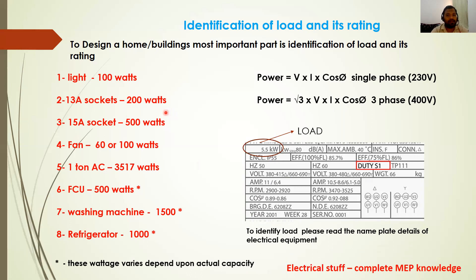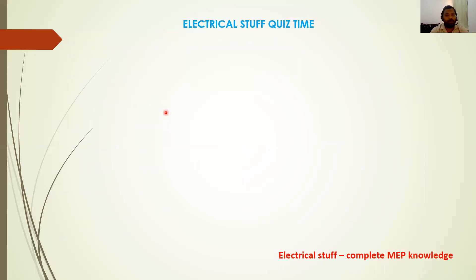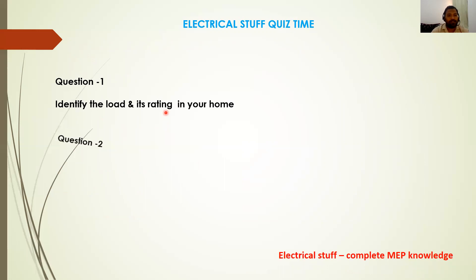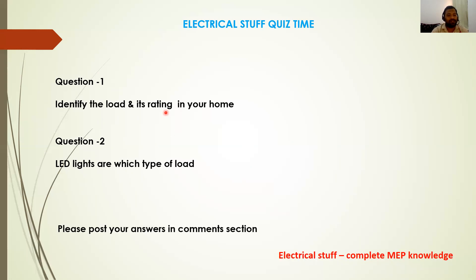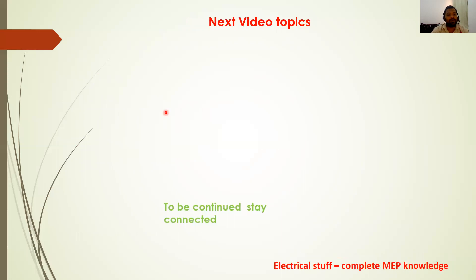Now it's quiz time. First question: identify the loads and their ratings in your home. Second question: LED lights — which type of load are they? We learned three types of load classifications — resistive, inductive, and capacitive. Are LED lights resistive, inductive, or capacitive? Please type your answer in the comment section.